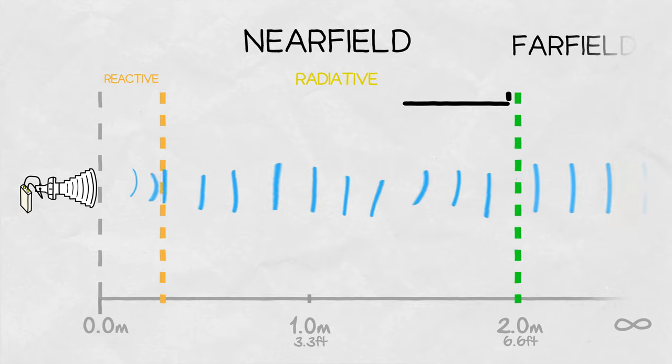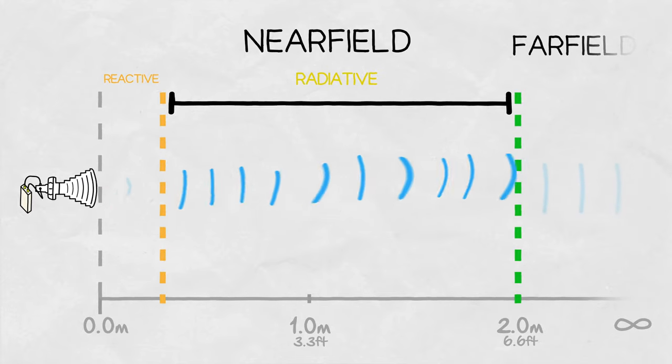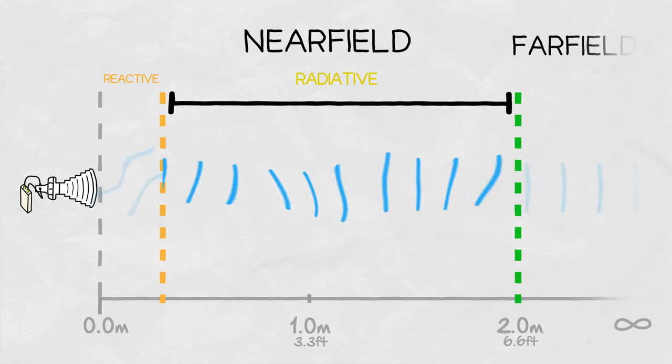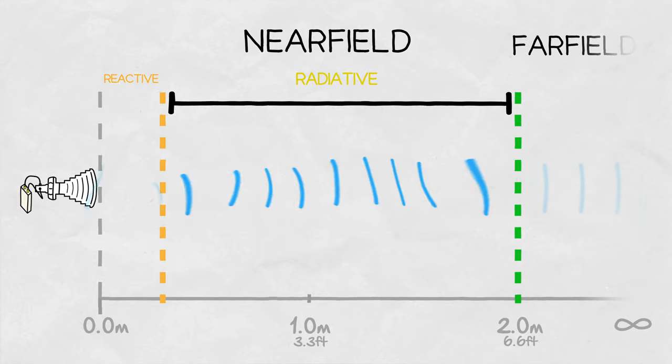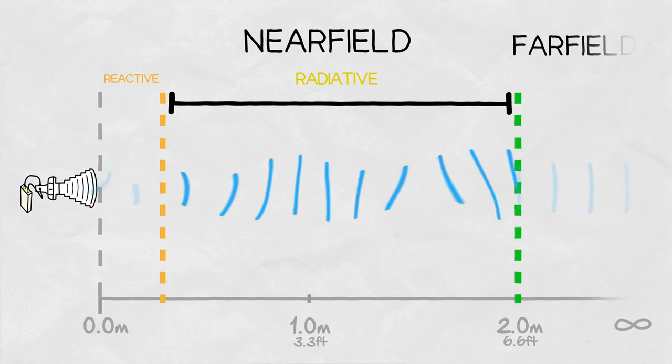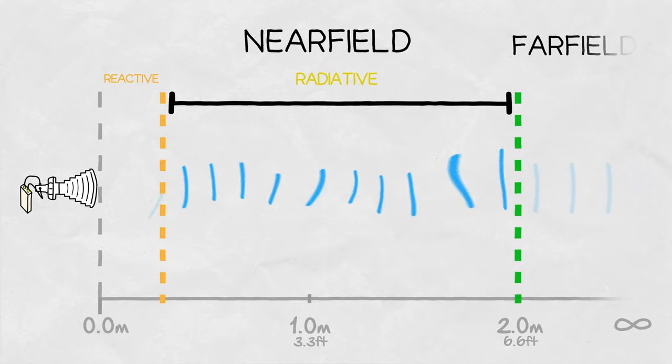Finally, the radiative near field is the region in the middle. The EM fields have not yet consolidated into the far field structure, but anything placed in this region is far enough not to have a direct influence on the antenna's performance.